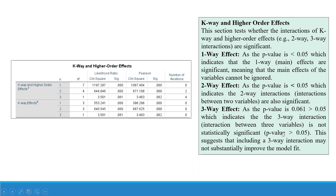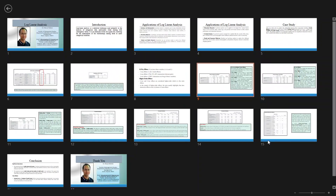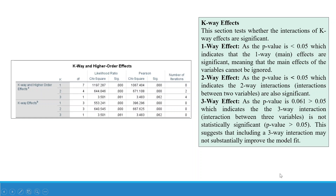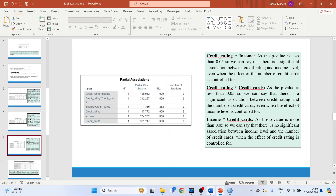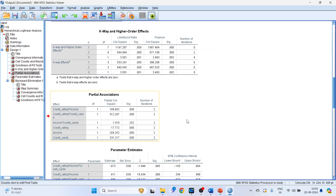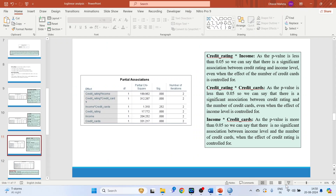Since the three-way p-value is greater than 0.05, this suggests that including a three-way interaction may not substantially improve the model fit. For the K-way effects section similarly, main effects and two-way interactions show p-values less than 0.05, while the three-way interaction shows a p-value greater than 0.05, confirming three-way effects are not significant.